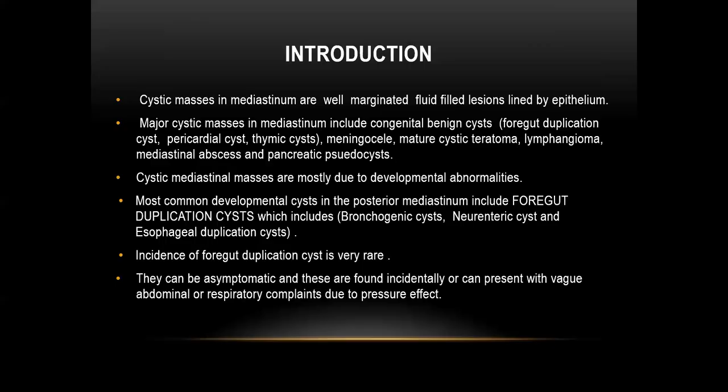Coming to the introduction, cystic masses in the mediastinum are well-marginated fluid-filled lesions lined by an epithelium. Major cystic masses in the mediastinum include congenital benign cysts, which includes foregut duplication cysts, pericardial cysts, and thymic cysts. Meningocele, mature cystic teratoma, lymphangioma, mediastinal abscess, and pancreatic pseudocysts are other differential diagnoses.